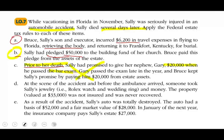Situation D: At the scene of the accident, before the ambulance arrived, someone took Sally's jewelry — a Rolex watch, wedding ring, and money. The property was valued at $33,000, was not insured, and was never recovered. Importantly, this happened before she died, since she died several days later. This property is not part of the estate, and since there was no insurance recovery, it is simply gone.